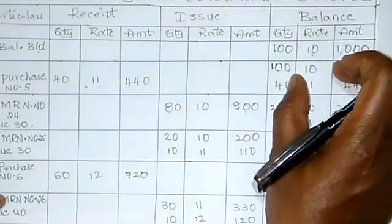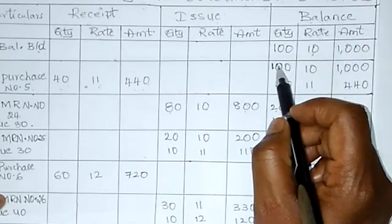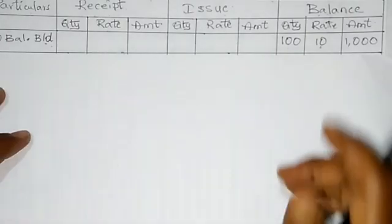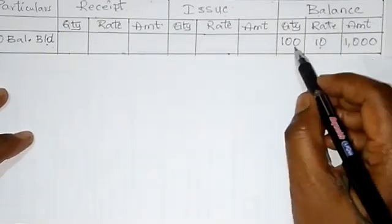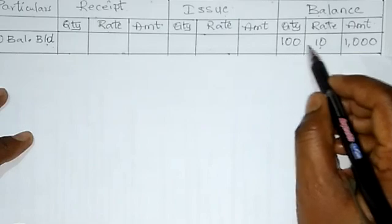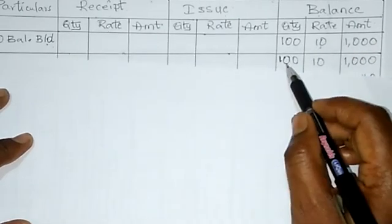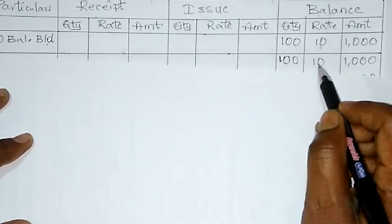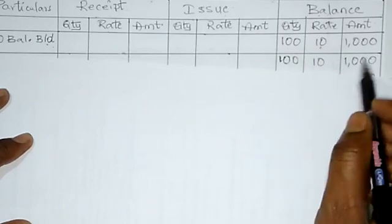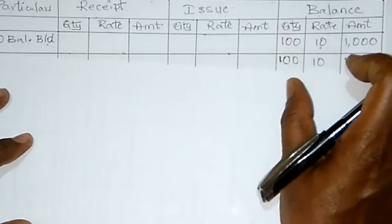Quantity multiplied by rate gives amount of Rs.1000. So we enter quantity, rate, and amount. As it is, enter in the next column as well — 100 quantity, rate 10, amount 1000. Enter carefully.